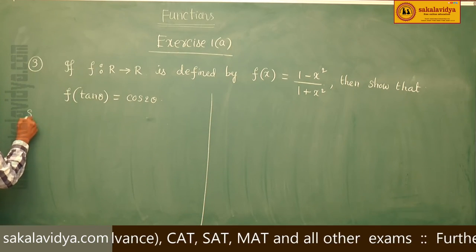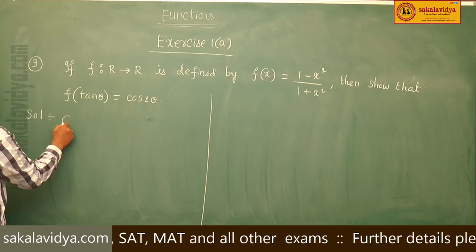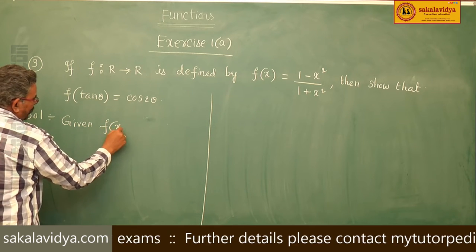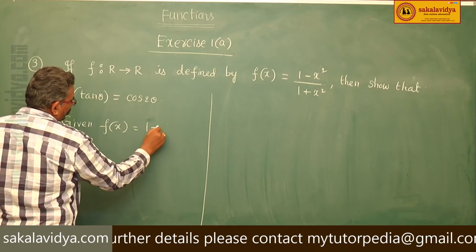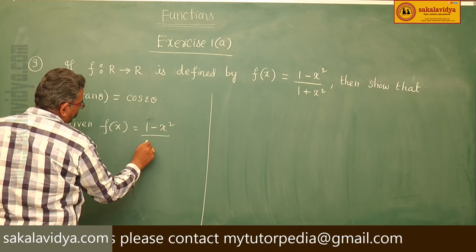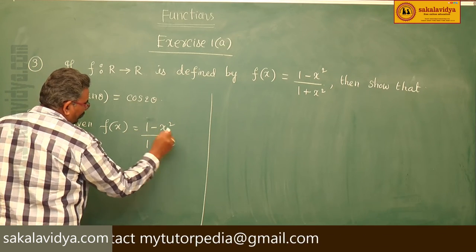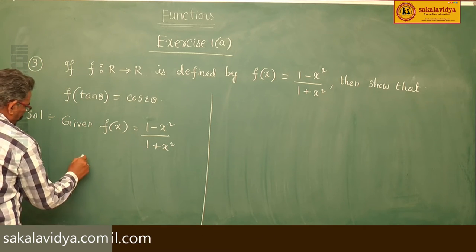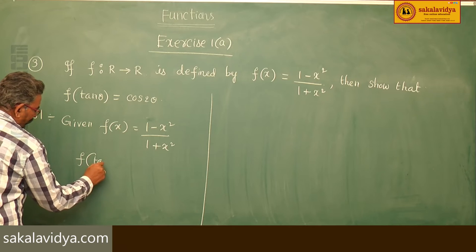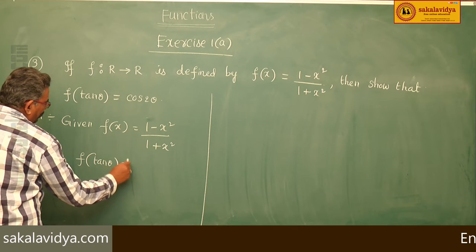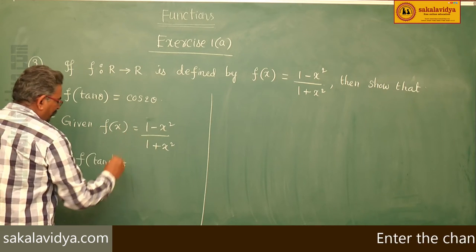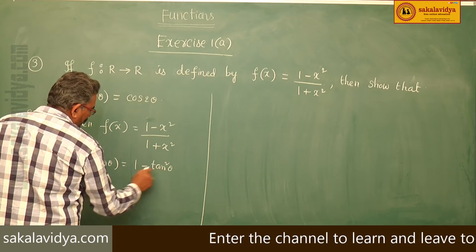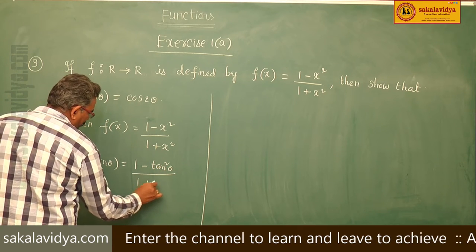Solution: given f(x) = (1 - x²) / (1 + x²), we have to find f(tan θ). f(tan θ) means in the place of x we replace tan θ, giving (1 - tan²θ) / (1 + tan²θ).